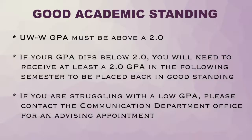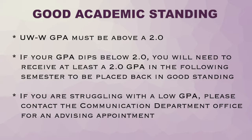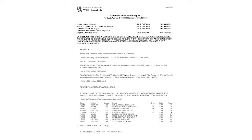Finally, in this area of the AAR is your current academic standing. In order to stay in good academic standing, your UW-W GPA must be above 2.0. If your GPA dips below 2.0, you will need to receive at least a 2.0 GPA in the following semester in order to be placed back in good standing. If you are struggling with a low GPA, please contact the Communication Department office for an advising appointment. There are a variety of strategies you can use to improve your overall GPA.